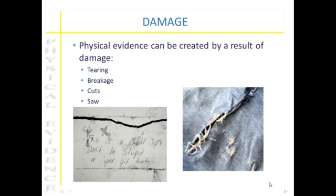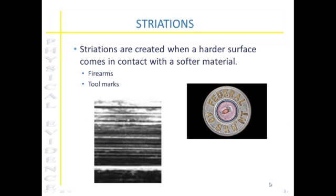Actions such as tearing, breaking, cuts, or even a sawing motion can create damage to items and create physical evidence. Striations can also be created to bring about physical evidence, and these are usually going to be associated with firearms examinations or tool mark examinations.